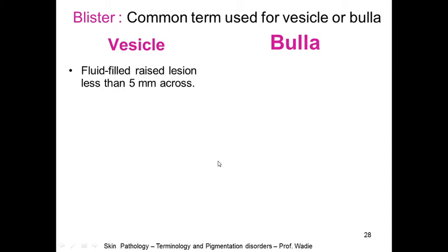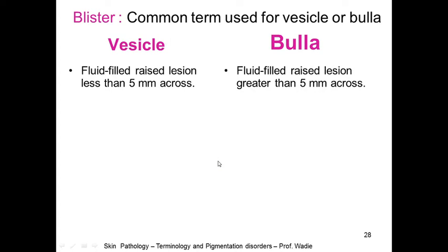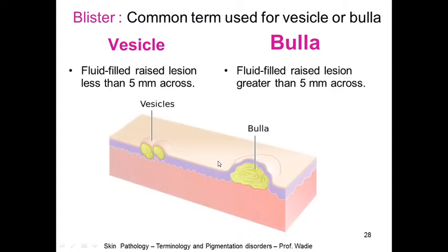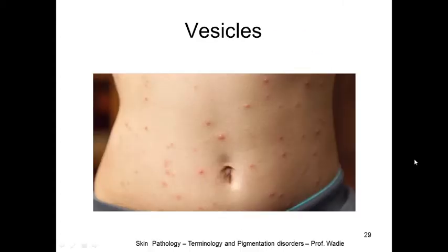A blister is a common term used for vesicle or bulla. A vesicle is a fluid-filled raised lesion less than five millimeters across, whereas a bulla is a fluid-filled raised lesion greater than five millimeters across. When they are small we call them vesicles; when large we call them bulla. These are vesicles — less than five millimeter fluid-filled lesions.